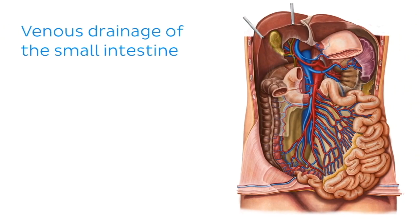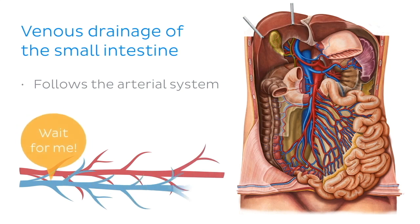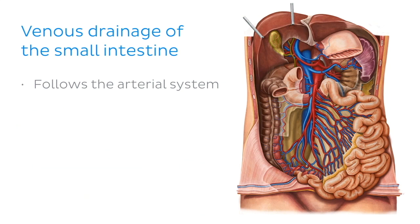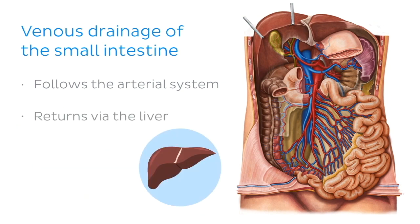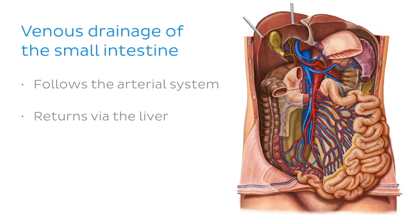The venous system of the small intestine will mostly follow the arterial system of the small intestine. But all of the blood has to return via the liver so that the nutrients can be processed. This means the larger veins aren't paired with arteries that come from the aorta, because they go straight into the liver via the portal venous system.